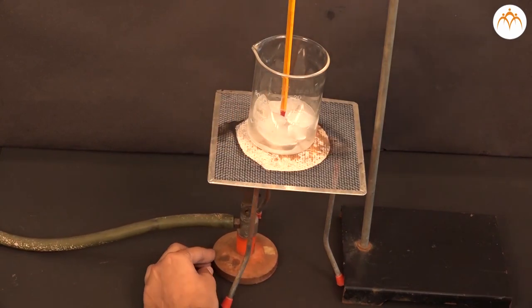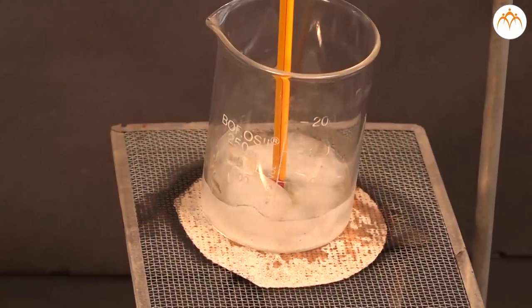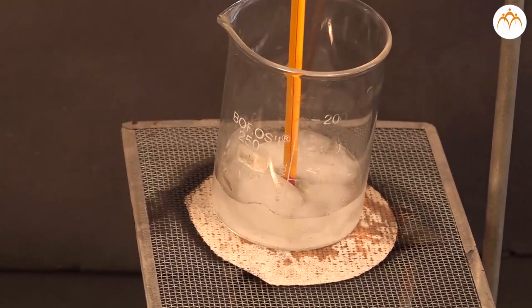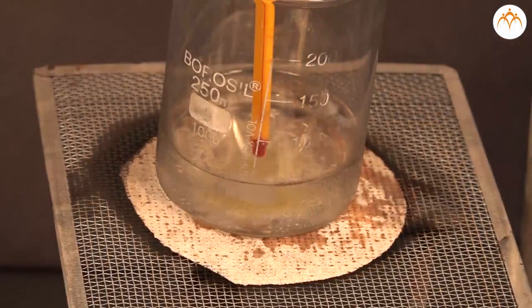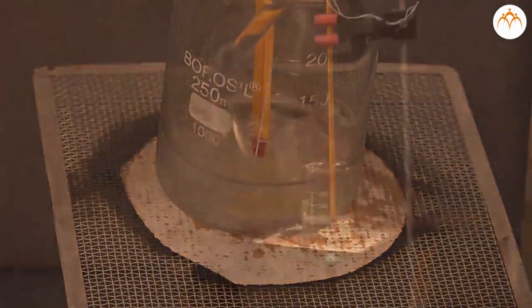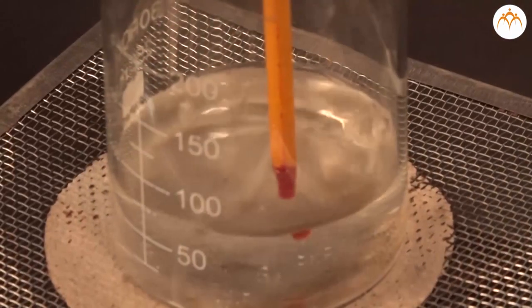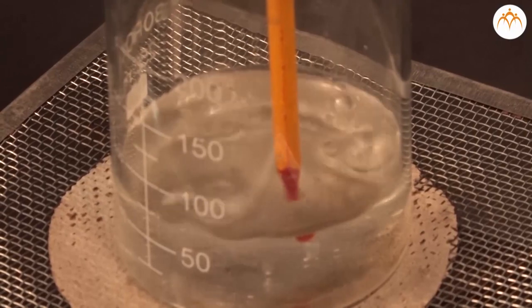Heat the ice using a burner or spirit lamp. Measure the temperature of ice. Record the temperature using the thermometer after every minute. Temperature increases slowly.